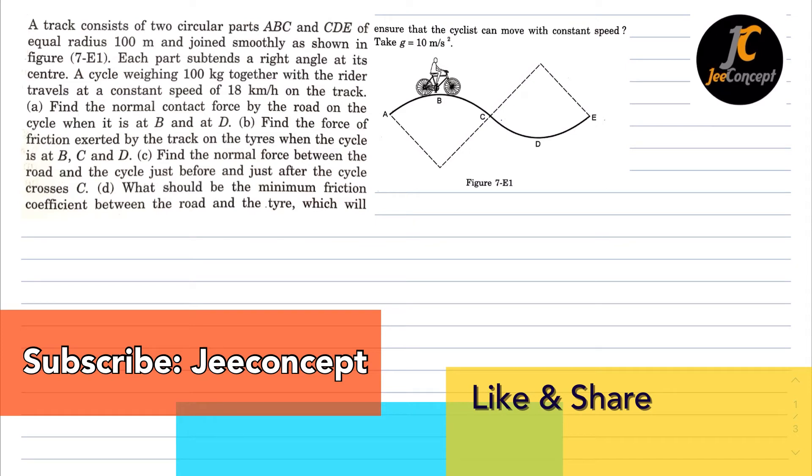Hello everyone, in this video we will try to find the solution for a problem which says a track consists of two circular parts ABC and CDE of equal radius 100 meter and joined smoothly as shown in figure.